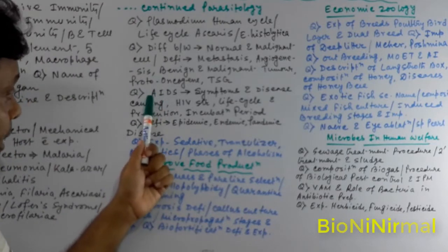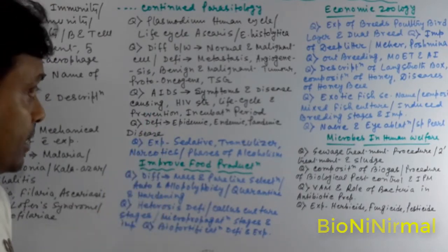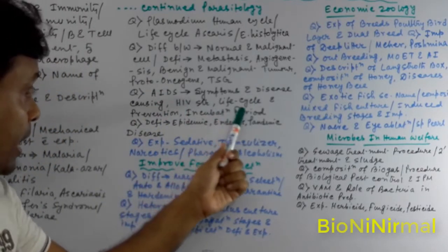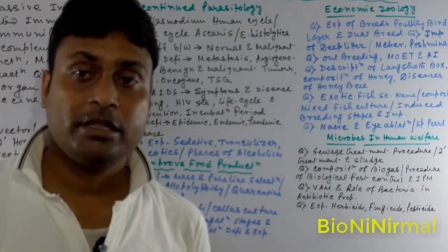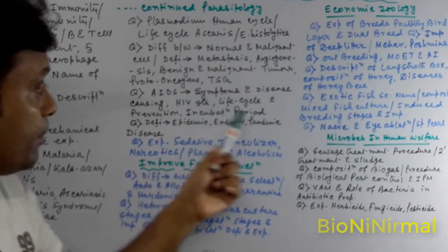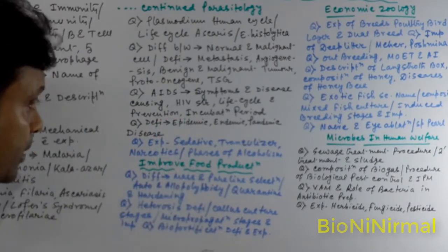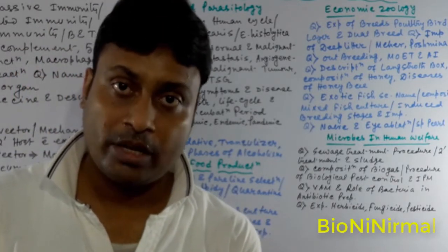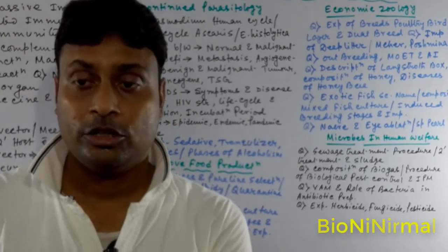Next is AIDS — Acquired Immune Deficiency Syndrome — its disease-causing agent HIV, prevention, HIV incubation period. Then definitions with examples: epidemic, endemic, pandemic disease — what these mean. Also, zoonotic disease — definition and setup.